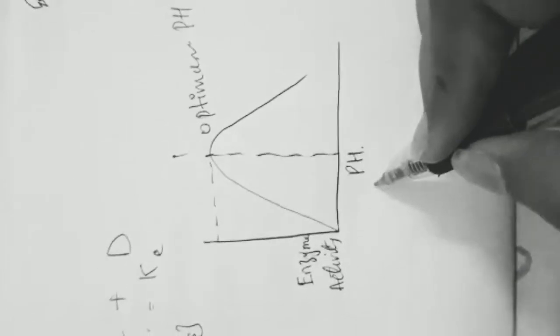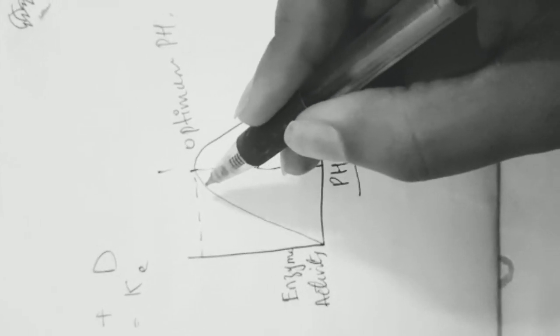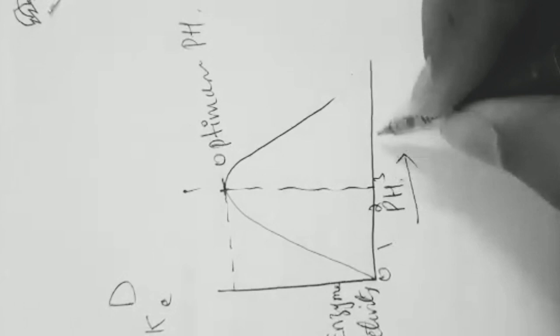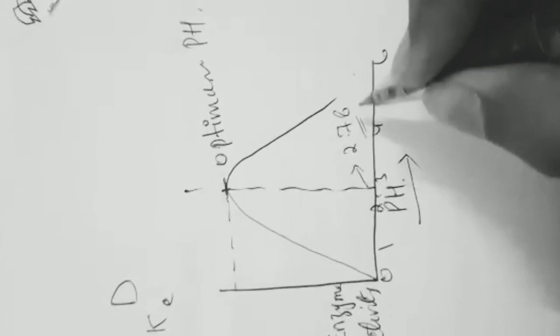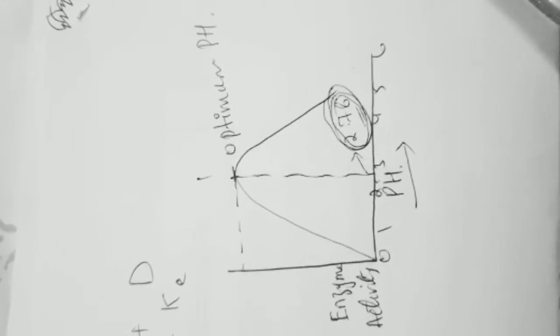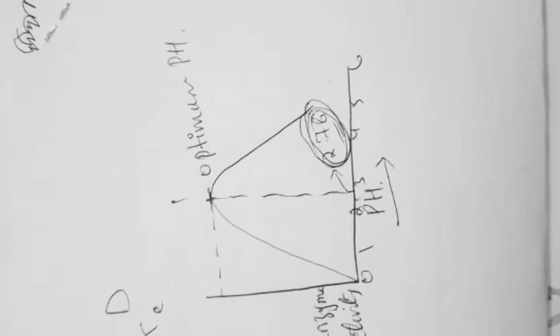A graph showing enzyme activity versus pH illustrates that as pH increases, enzyme activity also increases up to a certain level. The pH at which the enzyme shows maximum activity is called its optimum pH — approximately 2.78 in the example shown. After that optimum pH, the activity of the enzyme decreases because the enzyme is denatured.